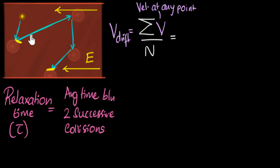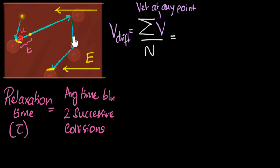If I want to know the velocity at a given point, I just need to know the velocity just after the previous collision — call that u — and how much time has elapsed since then — call that t. Then v = u + at gives the velocity at that point. For the next interval, I take the new initial velocity just after that collision and the new elapsed time t. This u and this u will obviously be different, as will the t.